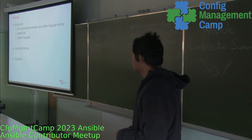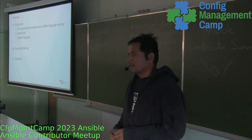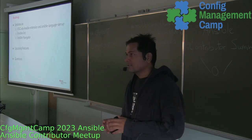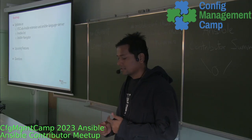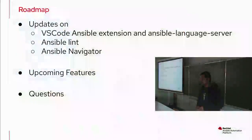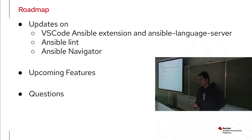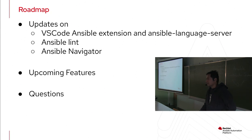I'll be talking about the Ansible developer tools roadmap — things that the Ansible team and developer tools team is working on, some things we already delivered, some things we are planning to do, and then gather feedback to identify what we'd like to see in the developer tools projects. I'll talk about the VS Code extension, newer features, already implemented features, enhancements to Lint over the past couple of months, and what we plan in future. Then we'll talk about Ansible Navigator and a new tool the team is working on: Ansible Risk Insights.